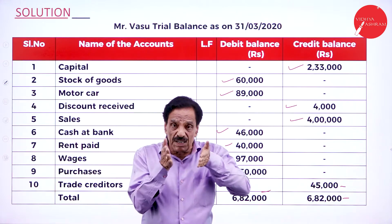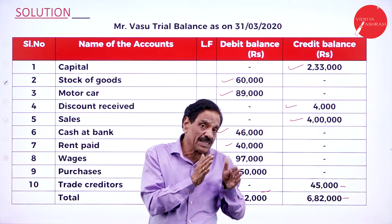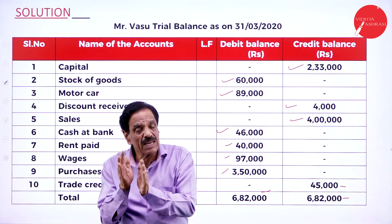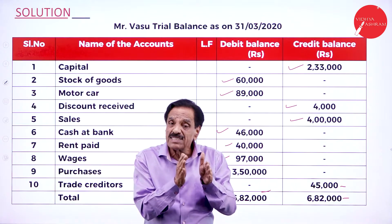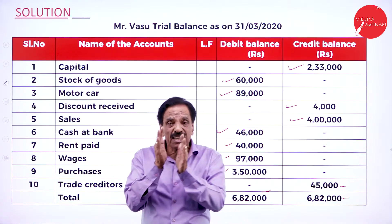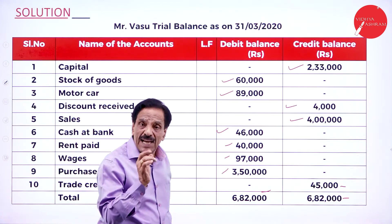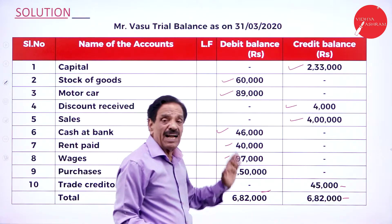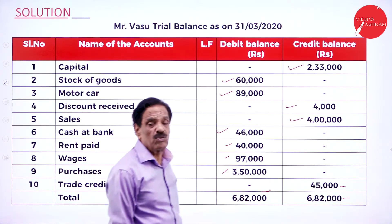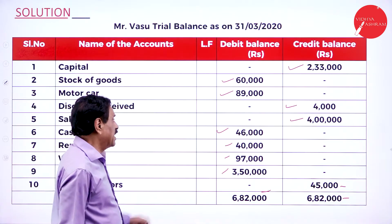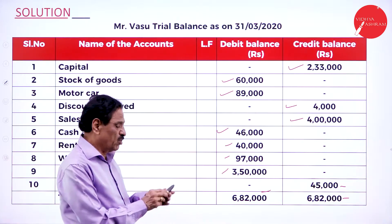The principle: all assets and expenses should be shown on the debit side; all liabilities and income should be shown on the credit side. Debit side shows assets and expenses; credit side shows incomes and liability. All liabilities and income on the credit side; all assets and expenses on the debit side.